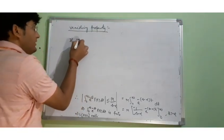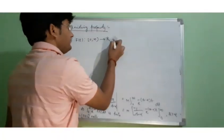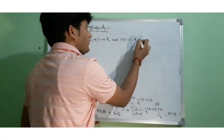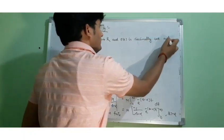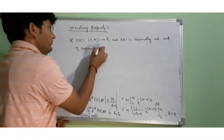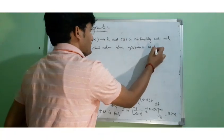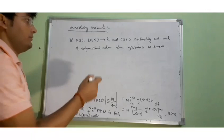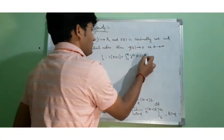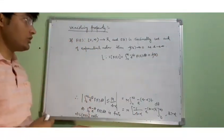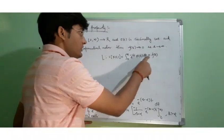If F(t) is a function from 0 to infinity to the real numbers, and F(t) is sectionally continuous or piecewise continuous and of exponential order, then the Laplace transform f(s), defined as the integral from 0 to infinity of e to the power minus st times F(t) dt, will tend to 0 as s tends to infinity.